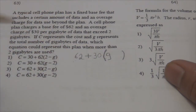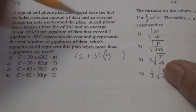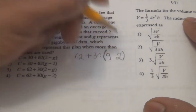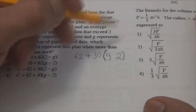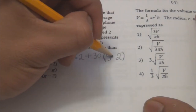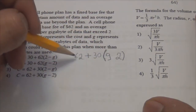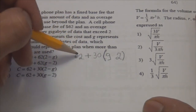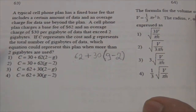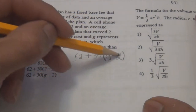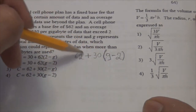After I use more than 2 gigabytes, I'm going to pay $30 extra for whatever gigabytes I use after I exceed the 2. I'm going to put a 2 here. If I only use 2 gigabytes, 2 minus 2 is 0, 30 times 0 is 0, so I only end up paying the $62. That works.